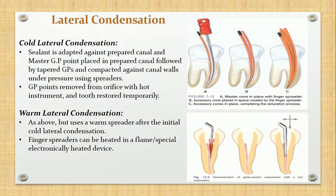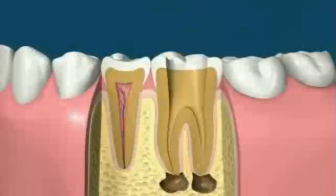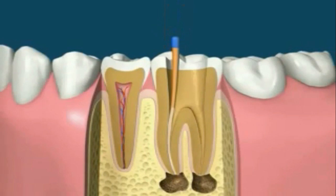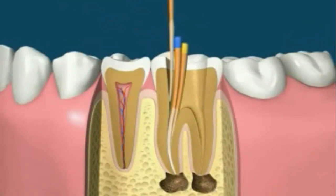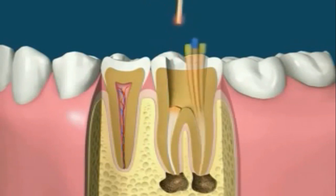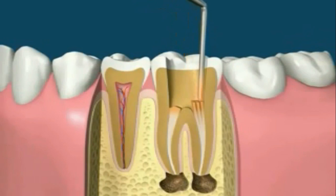Here is an animation video of the lateral condensation technique. You can see: first the master cone is selected, then sealer is applied, the master cone with sealer is placed, then additional gutta-percha points are added to fill the space and a spreader is used to condense them. Additional gutta-percha points are inserted to seal the canal, and finally the gutta-percha points are cut from the orifice with a heated instrument.